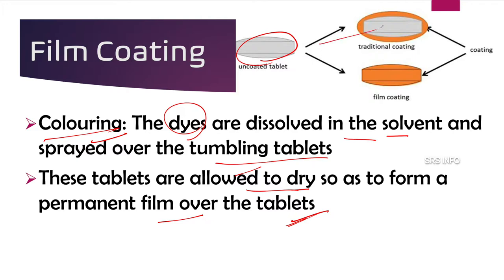When it gets dried, the color becomes permanent over the film-coated tablets. Film coating gives a complete, permanent color over the tablets, unlike uncoated tablets or traditional sugar coating.